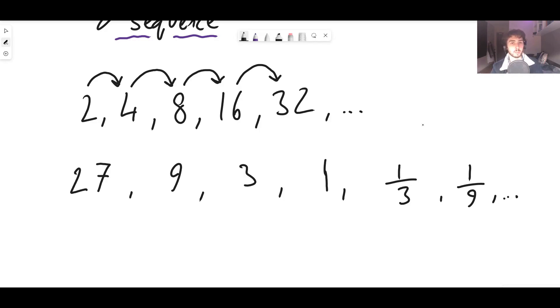As long as the ratio between each term is the same, then it's geometric. So in general, we can say, in general, that a geometric sequence follows this pattern.